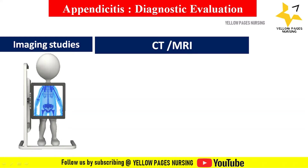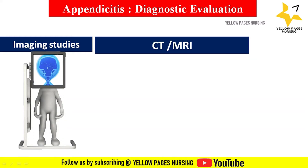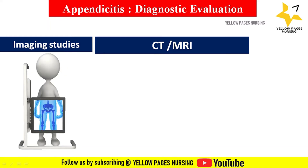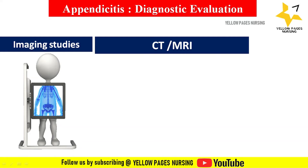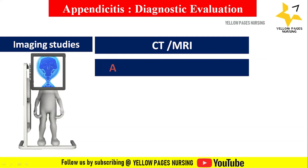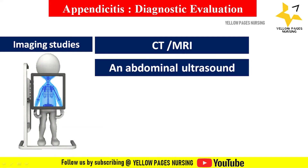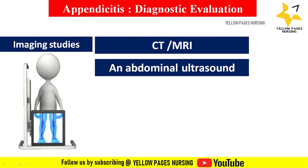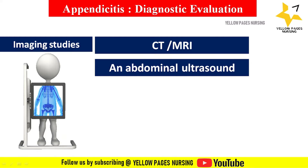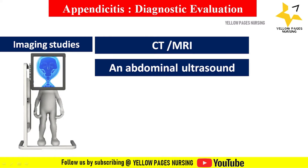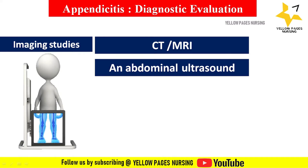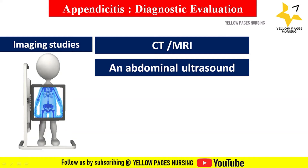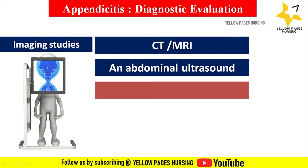In imaging studies, CT or MRI is performed. On CT scan, a dilated appendix with a distended lumen more than 6 mm in diameter can be found. On abdominal ultrasound, a peristaltic, non-compressible, dilated appendix with more than 6 mm outer diameter is found. Ultrasound also helps to identify peri-appendiceal fluid collection or enlargement.